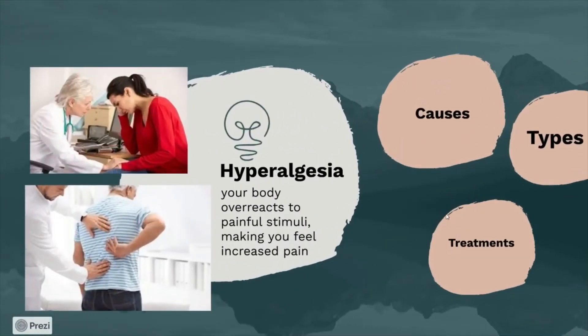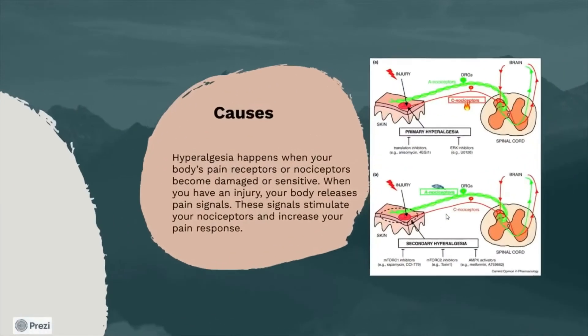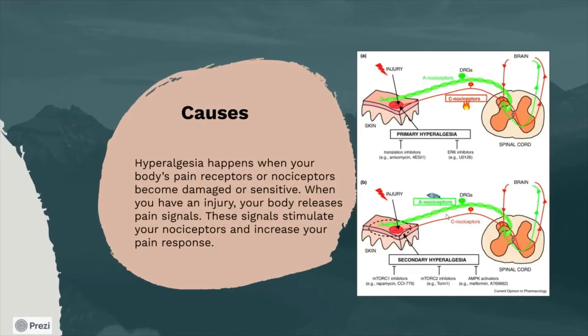Next is hyperalgesia. With hyperalgesia, your body overreacts to painful stimuli, making you feel increased pain. Hyperalgesia happens when your body's pain receptors, or nociceptors, become damaged or sensitive. When you have an injury, your body releases pain signals that stimulate your nociceptors and increase your pain response. The image on the right shows this pain response and the exaggeration of it.